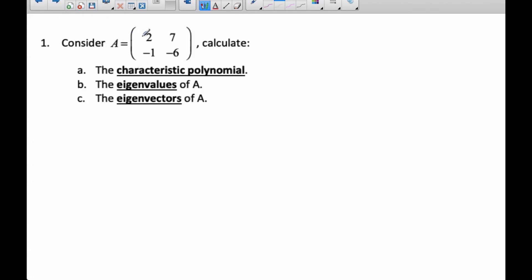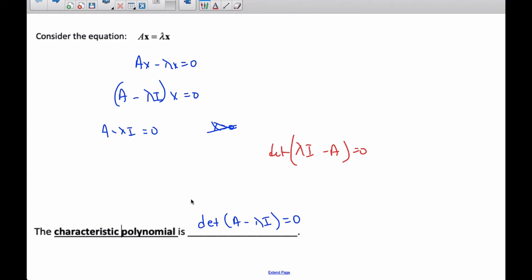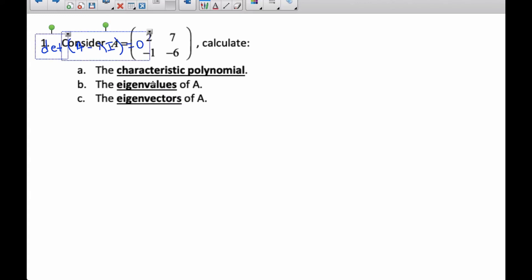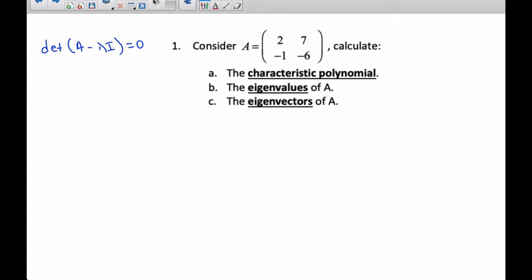Okay, so let's actually use this idea and try our problem. So we have A is 2, 7, negative 1, negative 6, and we're going to calculate the characteristic polynomial. Well, if you remember from up here, I know the characteristic polynomial is determinant A minus lambda i equal to zero. This is what I need to do. Okay, so I need to do this. And so, I'm going to go 2, 7, minus 1, minus 6, subtract lambda times 1, 0, 0, 1.